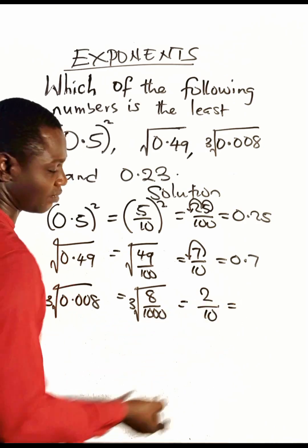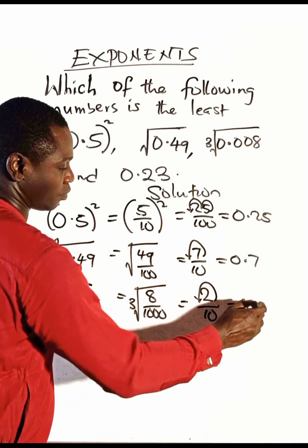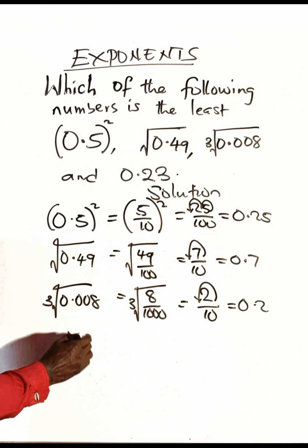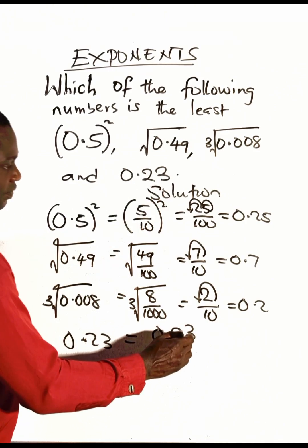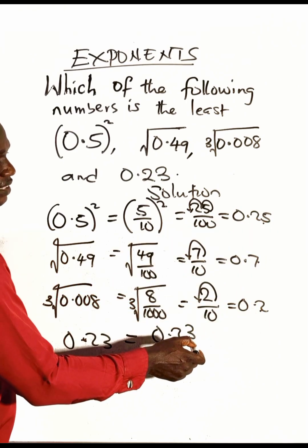And this other one is already in decimal. We are not solving it, so it's still 0.23. Now compare your results. Which is the smallest? Which is the greatest? Of course, 0.2 is the smallest. 0.2 is the least.